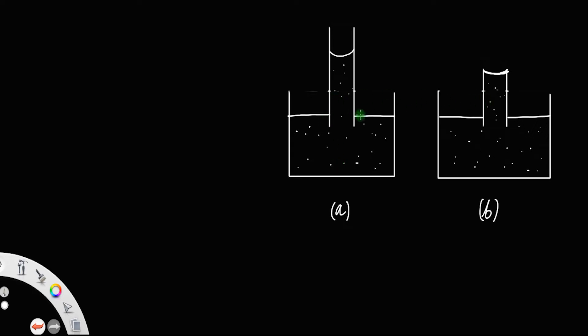Suppose you have two capillary tubes of the same radius. In the first case, the liquid rises to a height h. In the second case, the conditions remain the same, but we reduce the height of the tube to h'.